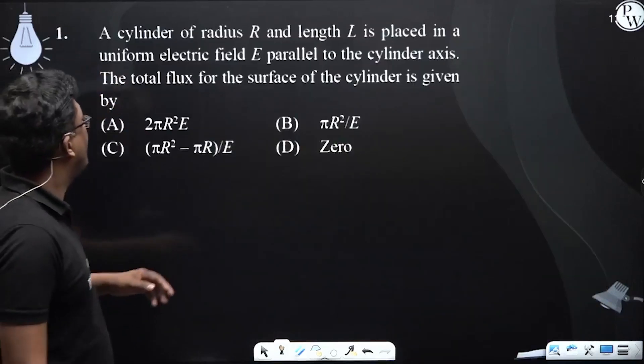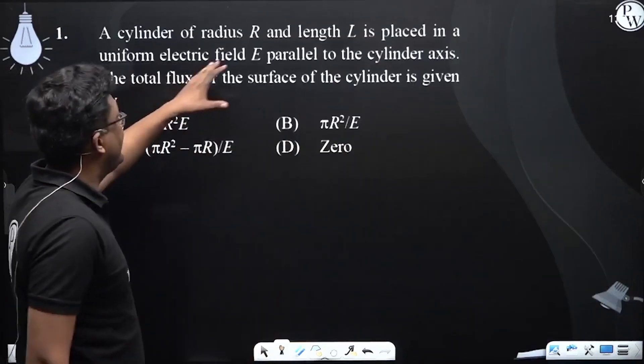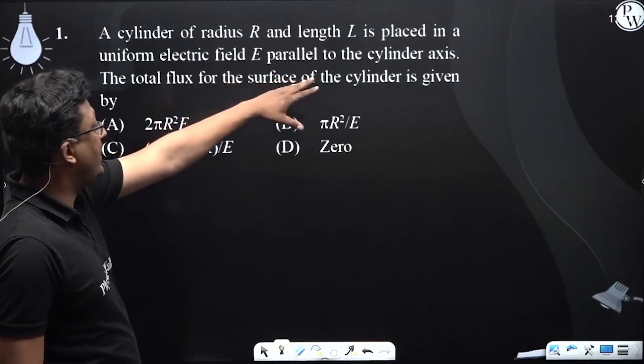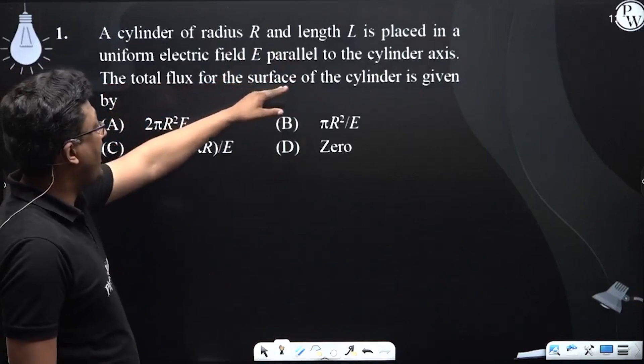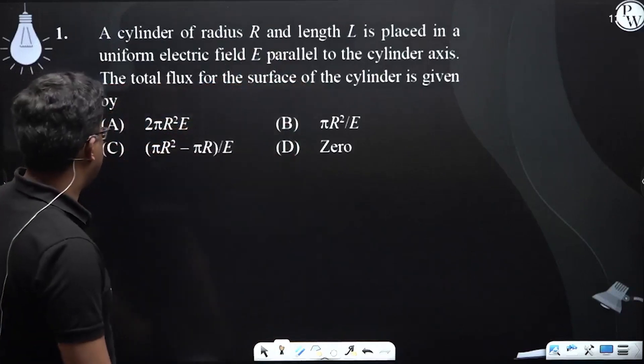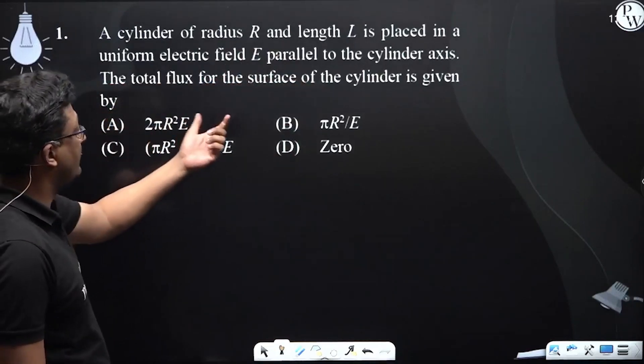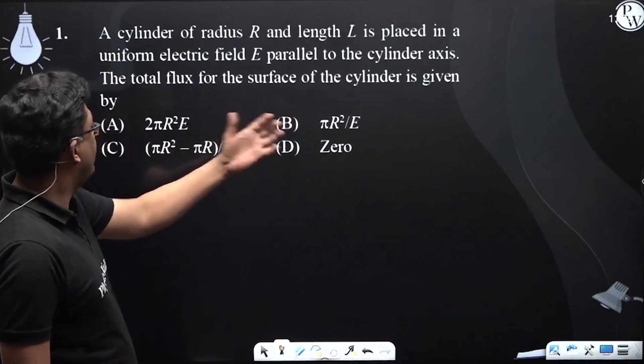Our first question is, a cylinder of radius capital R and length L is placed in uniform electric field E parallel to the cylinder's axis. The total flux of the surface of the cylinder is given by.